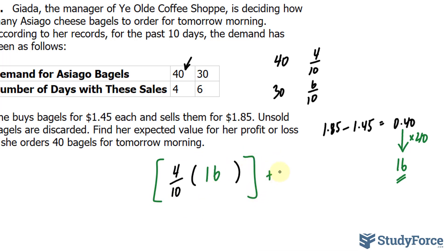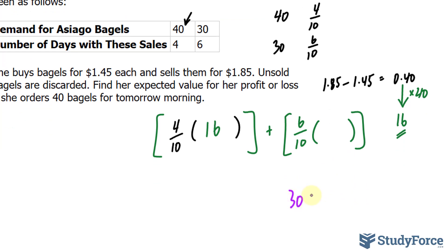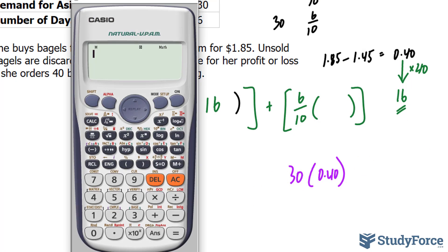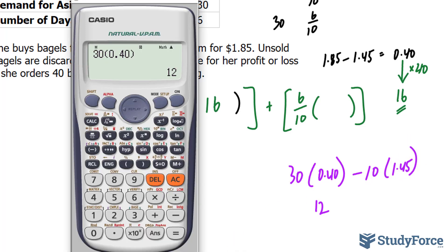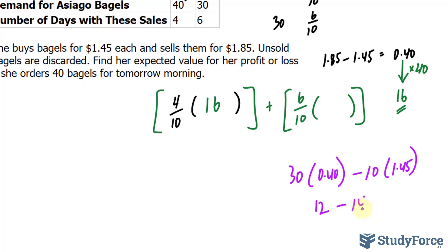Now the other event is only 30 people actually ask for it. That happens 6 out of the 10 days. If only 30 people purchase, we multiply that by the profit of $0.40, giving us $12 profit. But then you have the 10 bagels that were not purchased — if you don't sell those 10, you actually lost $1.45 on each. So 10 times 1.45 gives us $14.50. Unfortunately, this results in a net of negative $2.50.